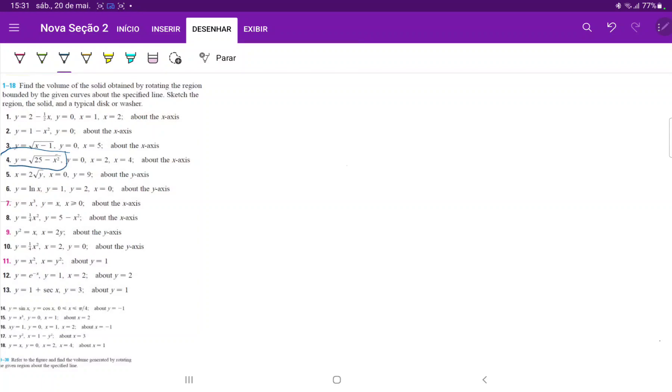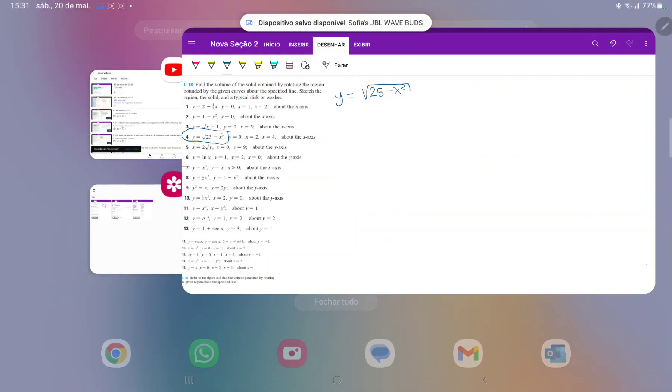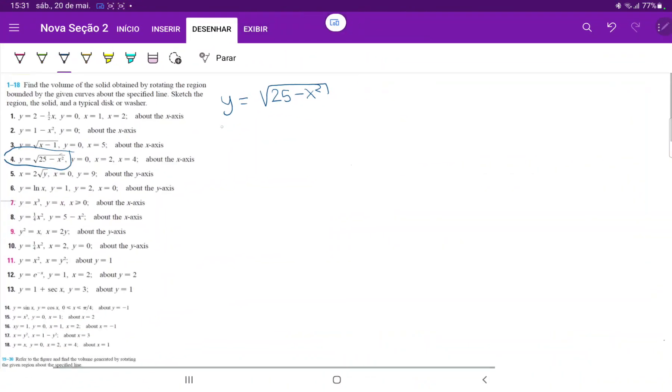So let's begin with drawing this first curve. This is an interesting curve because we have y is equal to square root of 25 minus x squared. Now this is a semicircle, right?